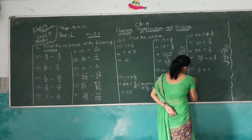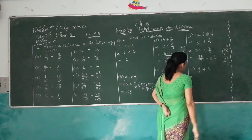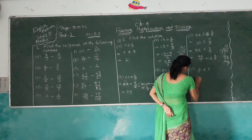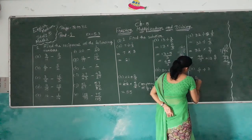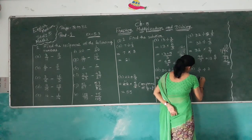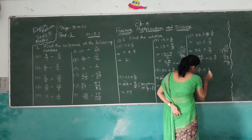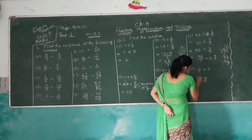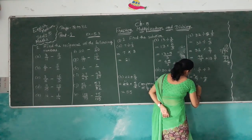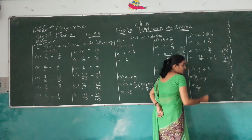Next: 6/7 divided by 3. The reciprocal of 3 is 1/3. So 6/7 multiplied by 1/3: 3 goes into 6 giving 2, so the answer is 2/7.